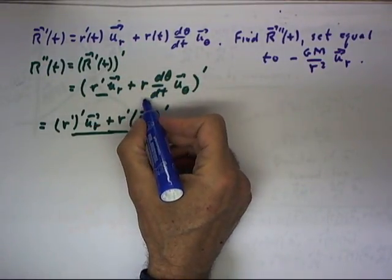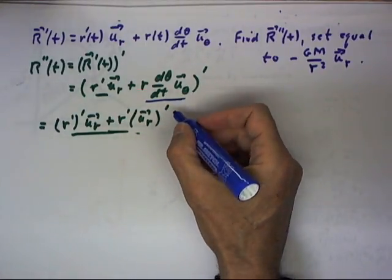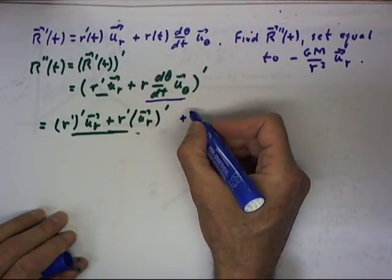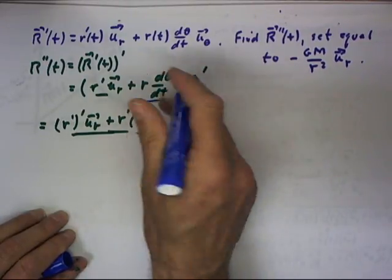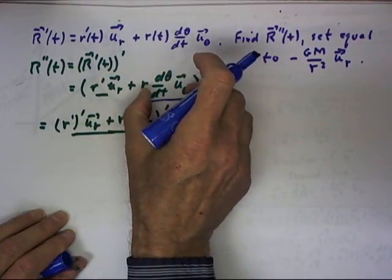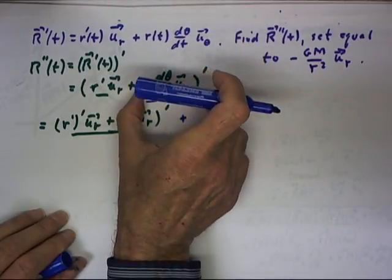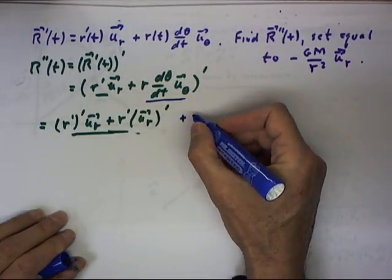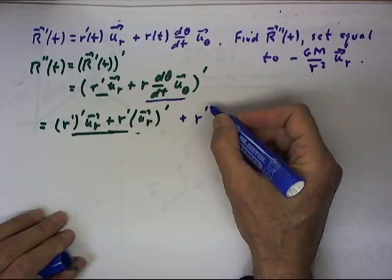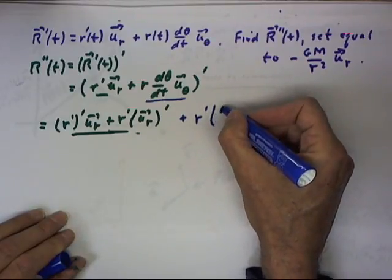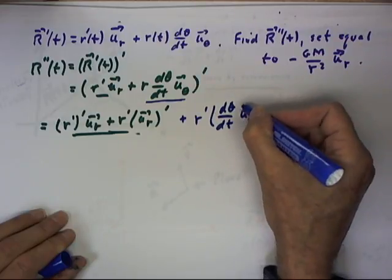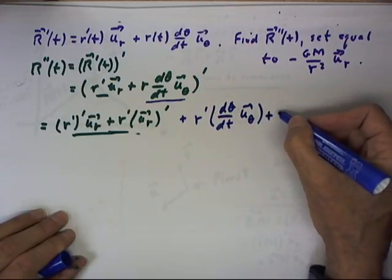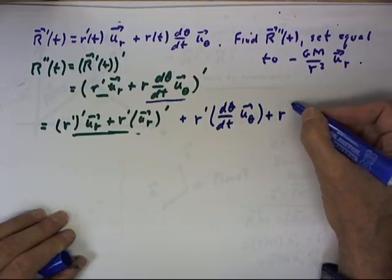Let's write out the derivative of this term. So that's going to be what? Let's regard this term as r times d theta dt u sub theta, product of two functions, the second of which is this part of the function. So product rule applied in a straightforward manner gives us the expression.